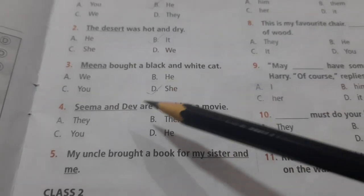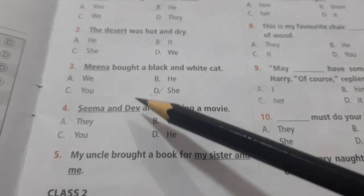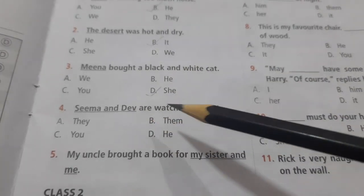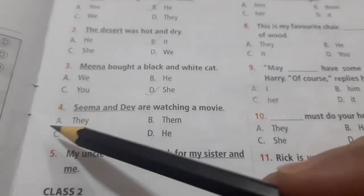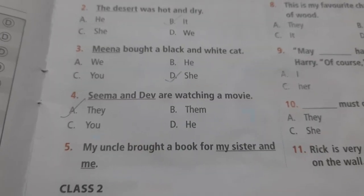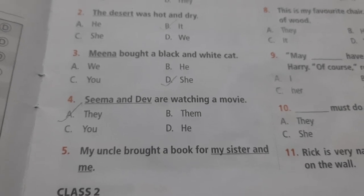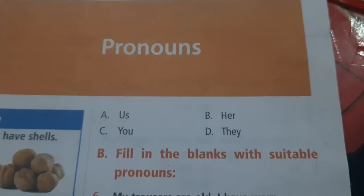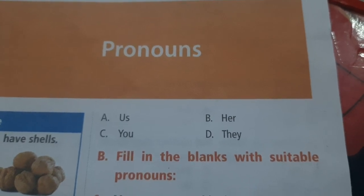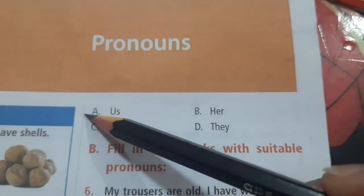Question number four: 'Seema and Dev are watching a movie.' We are talking about two people here. That's why you would use 'they are watching a movie', which is option A. Question number five: 'My uncle brought a book for my sister and me.' We are talking about two people over here, and that is why you will use 'us'. My uncle brought a book for us, which is option A.